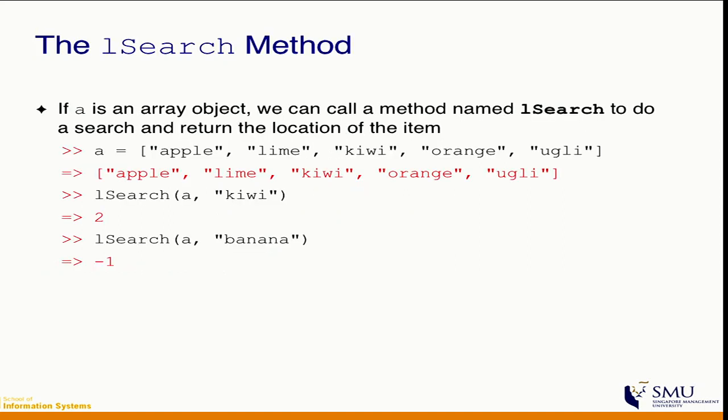The linear search method is going to look like this. Suppose you have an array with a number of words. If you call linear search — we term it lsearch — searching for 'kiwi' on array A, it's going to return 2, which is the index of the element 'kiwi' within the array. If you're looking for something not in the array, like 'banana', then it's going to return minus 1, because minus 1 indicates it's not within index 0 to n minus 1.